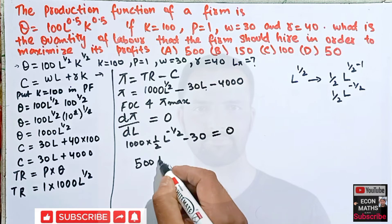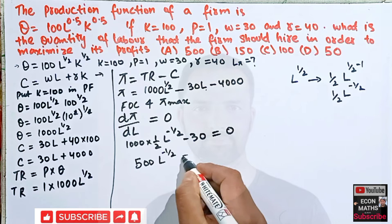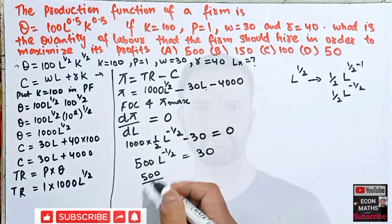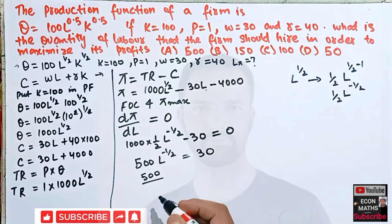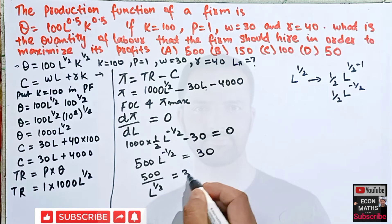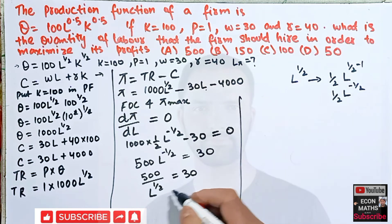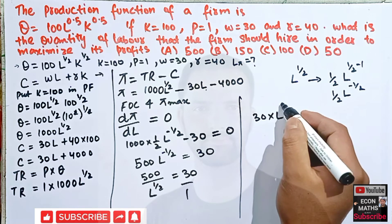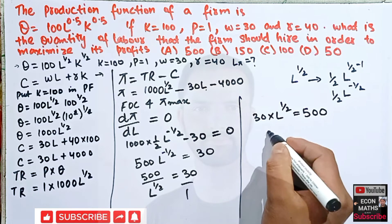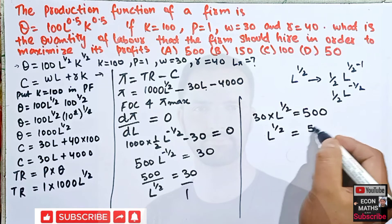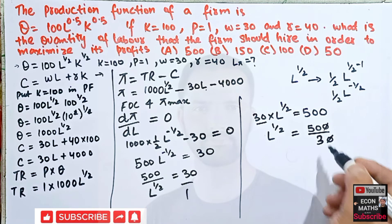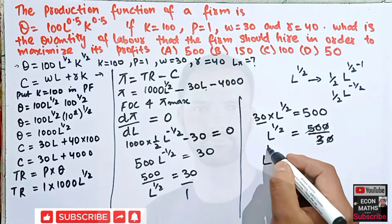Transposing −30 to the right-hand side gives 500L^(−1/2) = 30. Since L^(−1/2) in the denominator becomes L^(1/2), we write 500 / L^(1/2) = 30. Cross-multiplying gives 30 × L^(1/2) = 500, so L^(1/2) = 500/30 = 50/3. Simplifying, 500 divided by 30 gives L^(1/2) = 10, after canceling zeros: 50/5 = 10.